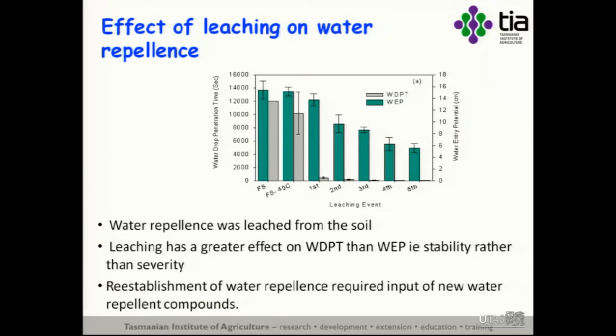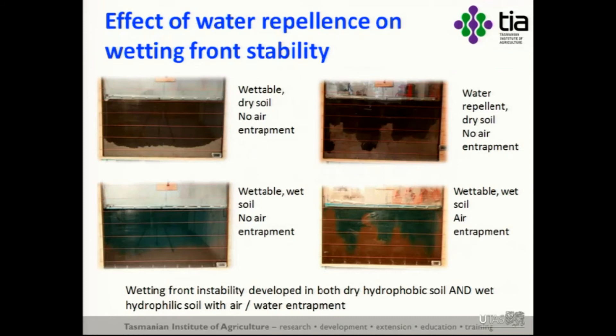I set up a leaching column and leached with water. The water drop penetration time — the persistence of water repellency — dropped dramatically with the first leaching event. So what we've got is rainfall leaching the soluble water-repellent compounds from the soil, particularly the compounds responsible for the persistence of water repellency rather than its physical severity. That has not been recorded in the literature before.